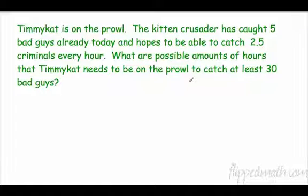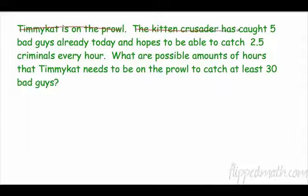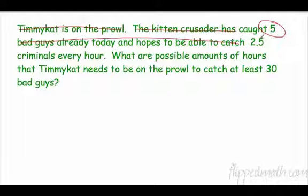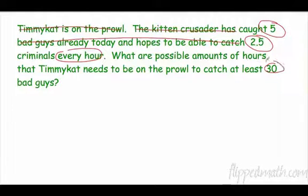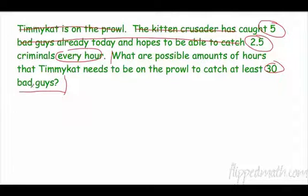Timmy Cat has caught five bad guys already today and hopes to catch two and a half criminals every hour. What are the possible amounts of hours Timmy Cat needs to be on the prowl to catch at least 30 bad guys? The key information: caught five bad guys already, catching two and a half criminals per hour, and needs at least 30 total.